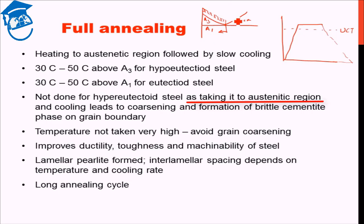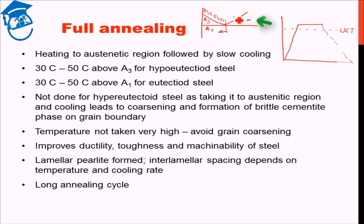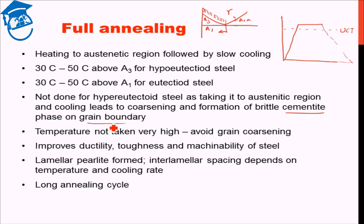The reason is that if we take hyper-eutectoid steel above the ACM region, complete austenite is obtained. When we start to cool it, we begin forming cementite along the grain boundaries, and this cementite phase is highly brittle, which can lead to fracturing. In addition, the high temperature leads to coarsening of austenite grains, so the resultant grains will also be quite coarse and the properties will not be good. The most important concern is cementite phase formation at the grain boundary.